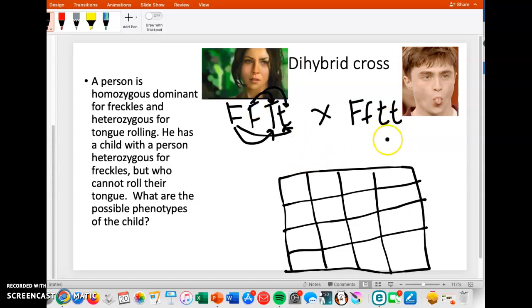That's what's going to go up at the top. So I would have big F big T, or big F little t. Or we go back up here, it would be again big F big T, and big F little t. Those are all the possibilities.